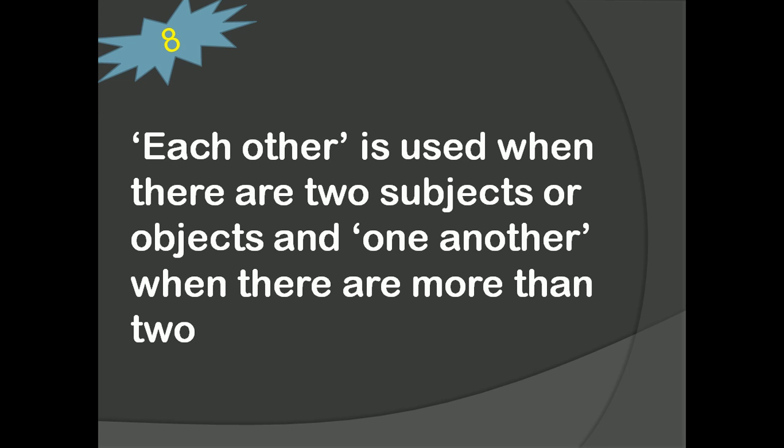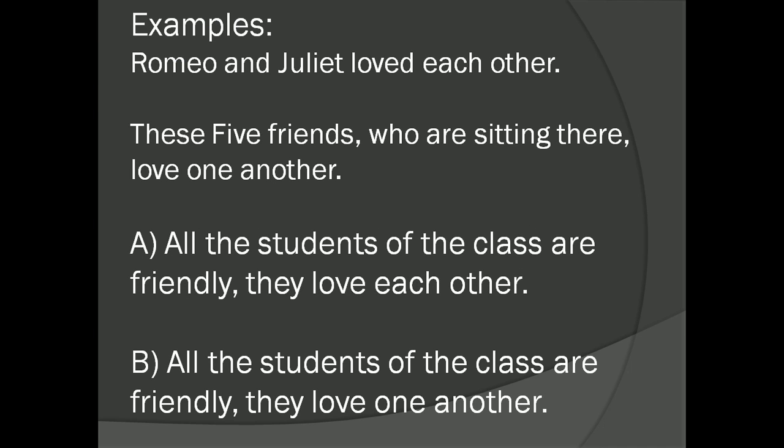Let's look at the next trick. Each other is used when there are two subjects or objects and one another when there are more than two. Please do remember. For example, Romeo and Juliet loved each other. As two subjects are there, we are using here each other. These five friends who are sitting there love one another. Why one another? Because there are more than two friends. Check with another example. All the students of the class are friendly. They love each other. All the students of the class are friendly. They love one another. Which one is correct? The second one. Please do remember, because all the students means they are more than two.